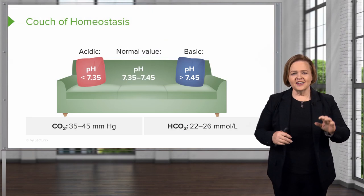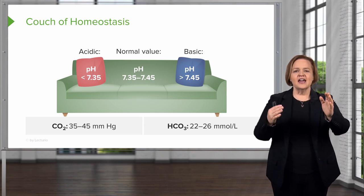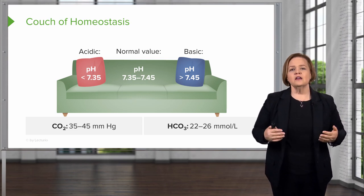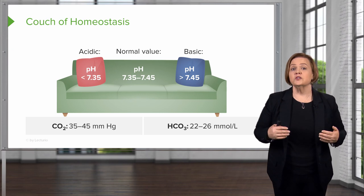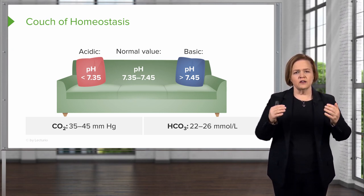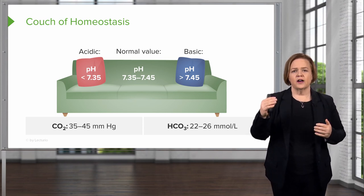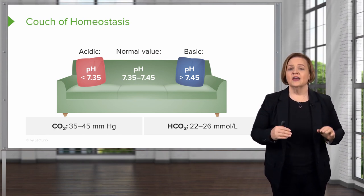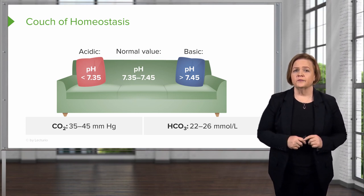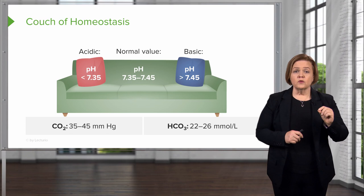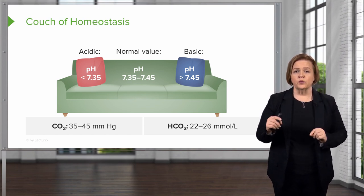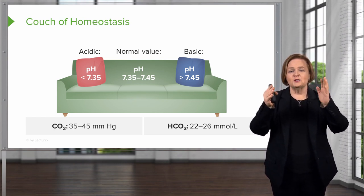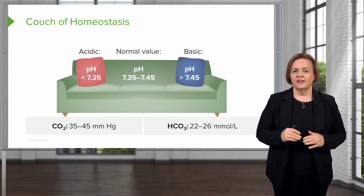We're going to take that picture with the guy on the couch, just kick back and relax, and apply it to ABGs. I call this the couch of homeostasis — think about it as where your body is most comfortable and the most efficient. On the couch, we're going to think of that as a normal pH of 7.35 to 7.45. That's the first value I want you to write down.